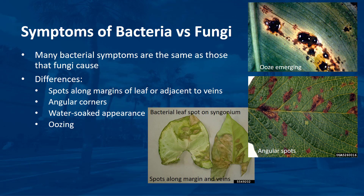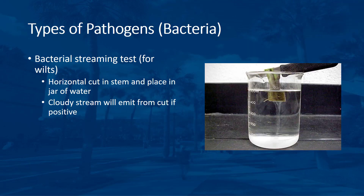Sometimes you can distinguish the difference between leaf diseases that bacteria and fungi cause by the location and appearance of the spots. Spots that bacteria cause often are along the margins of the leaf or adjacent to leaf veins, and sometimes have angular corners caused by the proximity of the leaf veins. Early in the morning or after heavy watering or rain, the margins of bacterial spots have a water-soaked appearance. This wet appearance is ooze emerging from the stem or leaf lesions. When the leaf is dry, the ooze dries and appears as a shiny, thin flake. Check for bacterial streaming to determine if bacteria are causing wilt: make a horizontal cut in a stem and place it in a jar of water. If bacteria are present, a cloudy stream will emit from the cut within a few minutes, as millions of bacteria compose this stream.